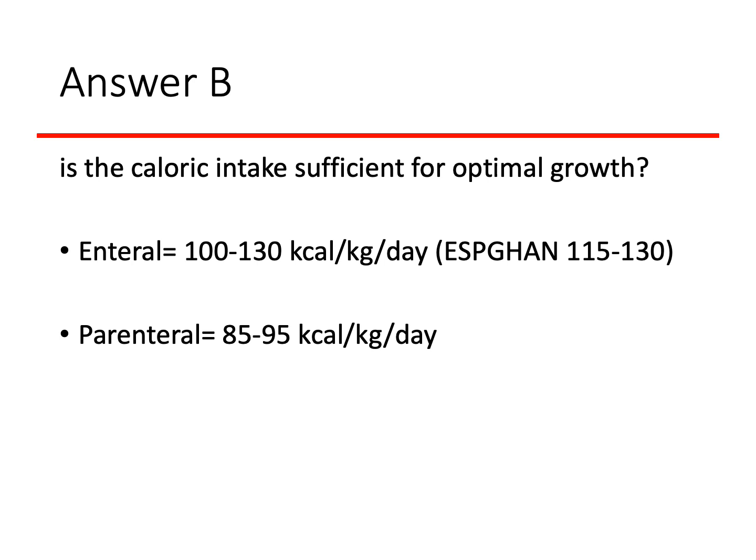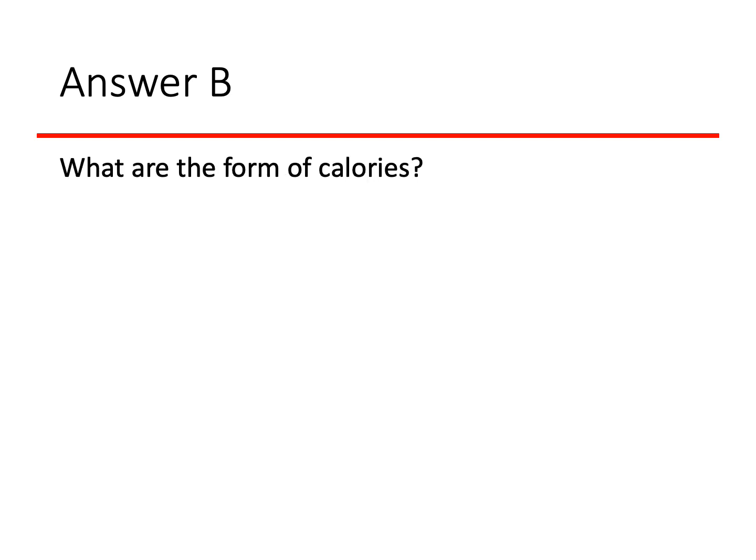Answer B asks whether the caloric intake is sufficient for optimal growth. Before answering, we need to know the recommendations for caloric intake for preterm babies. If the baby is receiving nutrition enterally, the baby needs between 100 and 130 kcal/kg/day — ESPGAN recommends 115 to 130. But if the baby is receiving nutrition parenterally, the baby will need only 85 to 95 kcal/kg/day. The difference is because enteral feeding requires digestion and absorption, which consumes some calories.